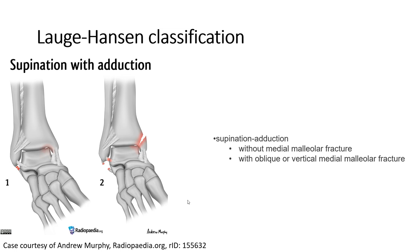The supination-adduction form can occur without major malleolar injury, or with an oblique or vertical medial malleolar fracture. This form is divided into 2 stages, as you can see in the diagram.